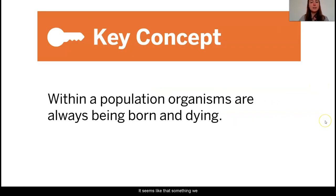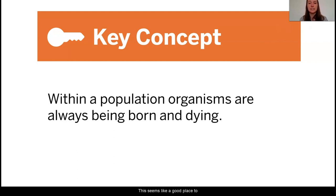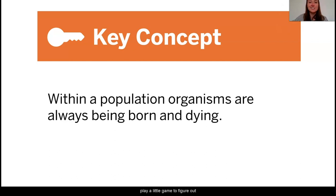It seems like something we can say for sure is that within a population, organisms are always being born and always dying. Most of the time when I was clicking in the digital model, I saw reproduction happening — meaning giving births — or deaths, either by being eaten or dying from old age. This seems like a good place to start our investigations in our next lesson. If the moon jelly populations are increasing in size so quickly, what does this mean for the amount of births and deaths in the moon jelly population? This is where we're going to go tomorrow and play a little game to figure out how this all works. I hope to see you back, and I'm really excited to hear your continual thoughts as we continue collecting our evidence to help our scientists figure out our question about the moon jellies. See you later!